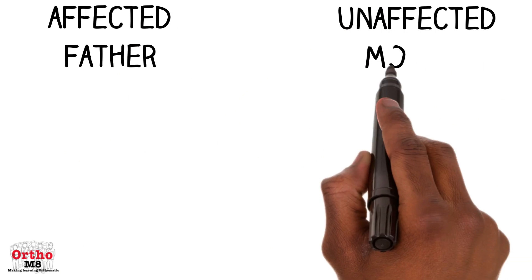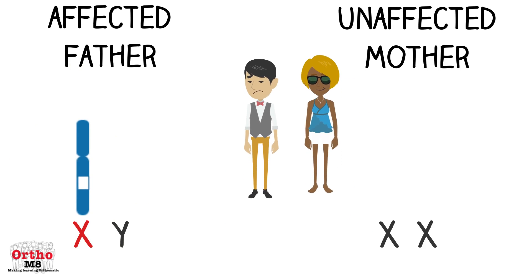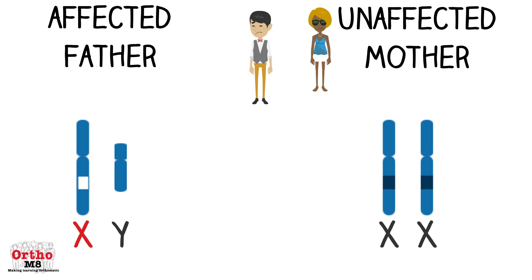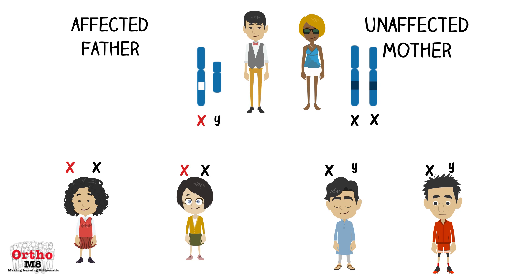If the father is affected, the male has an affected X chromosome and a normal Y chromosome, while the female has two normal X chromosomes. This means that all daughters will be affected, as the father can only donate an affected X to the daughters, and all males would be unaffected, as the father donates a Y to the sons.